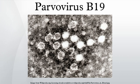Transmission: the virus is primarily spread by infected respiratory droplets. Bloodborne transmission, however, has been reported. The secondary attack risk for exposed household persons is about 50%, and about half of that for classroom contacts.